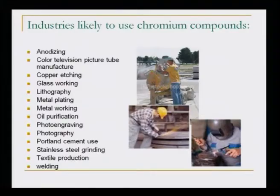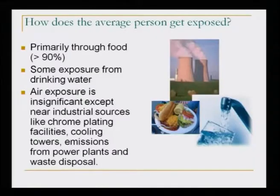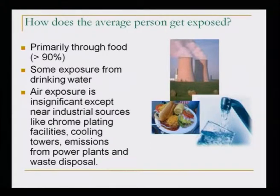How does the average person get exposed? About 90 percent of chromium exposure comes through food. Some exposure comes from drinking water. Air exposure is significant near industrial sources like chrome-plating facilities, cooling towers, emissions from power plants and waste disposal sites — these localized areas can cause airborne chromium species to enter our system.